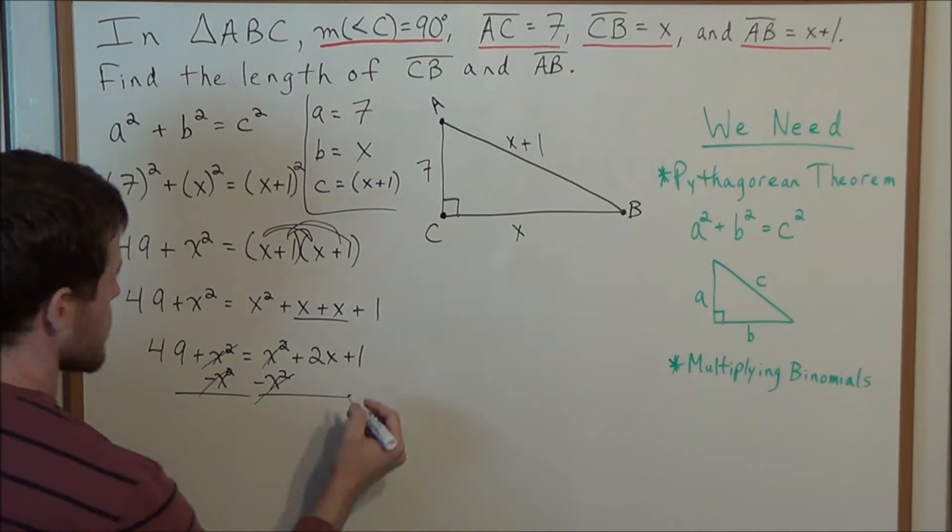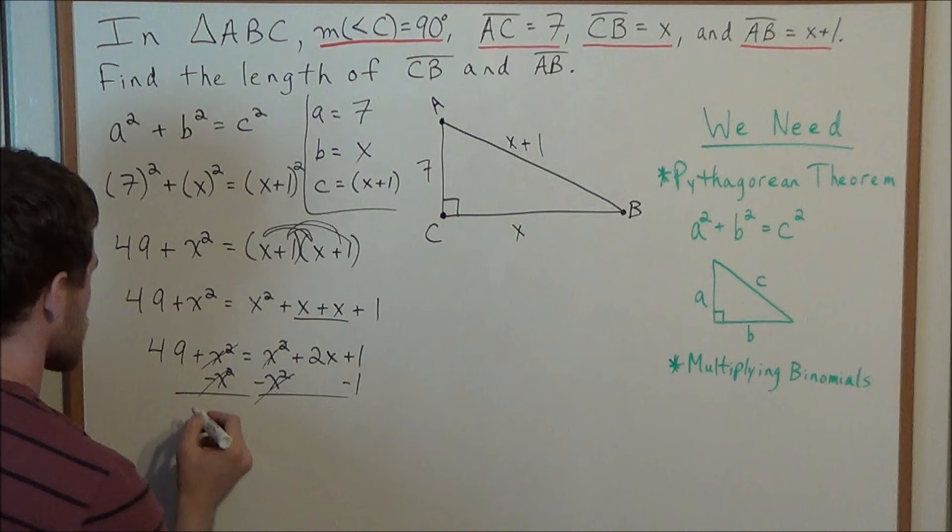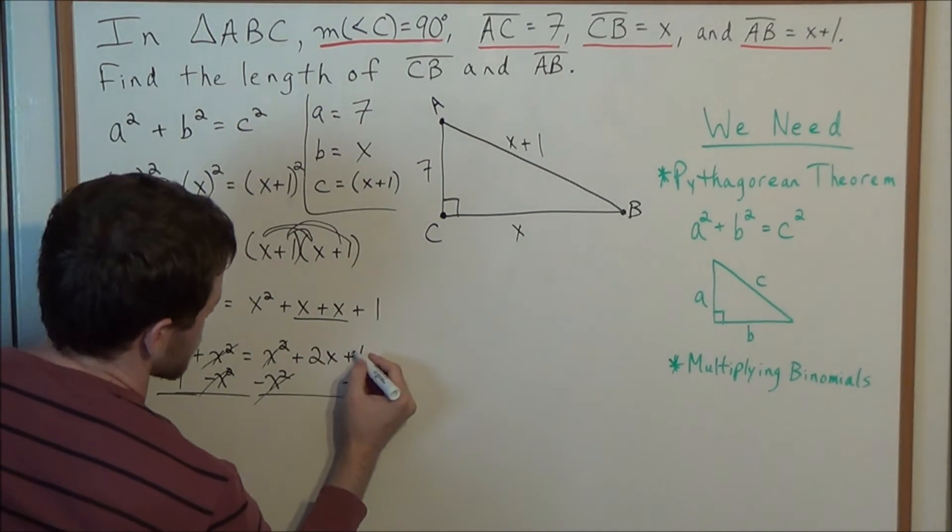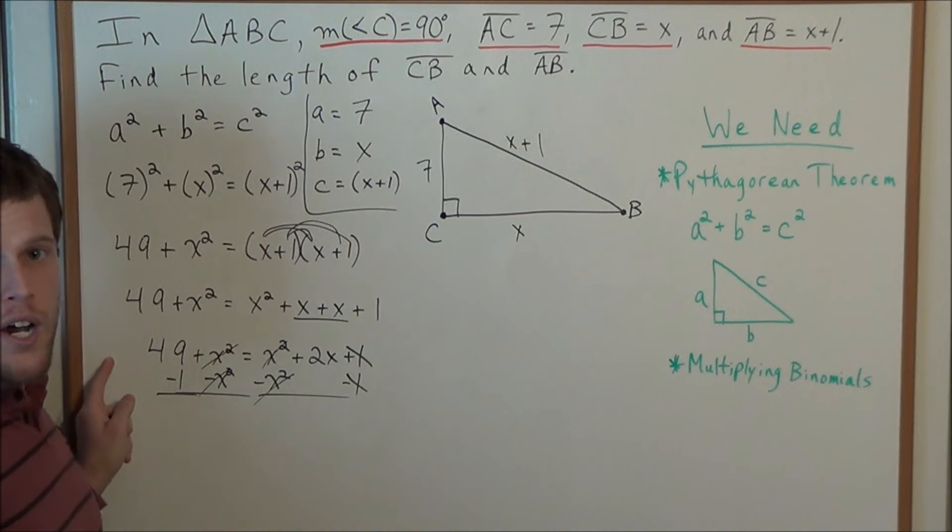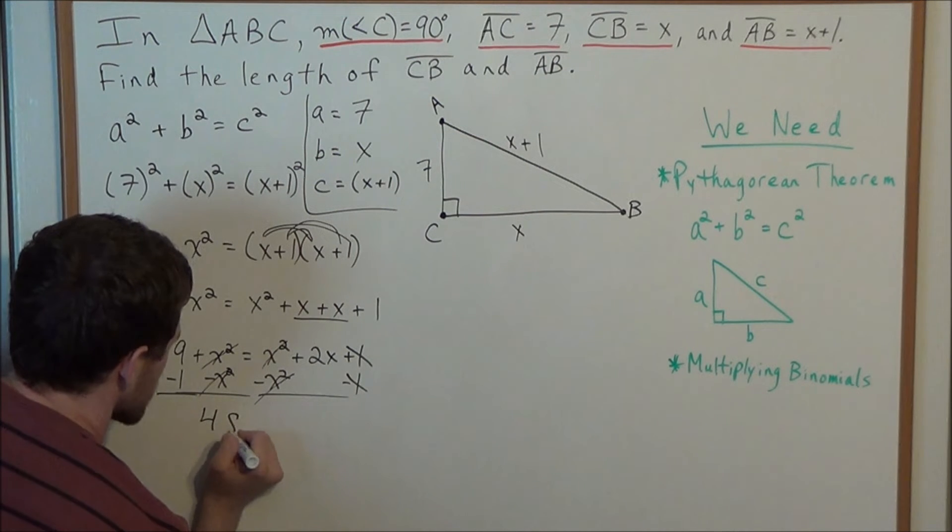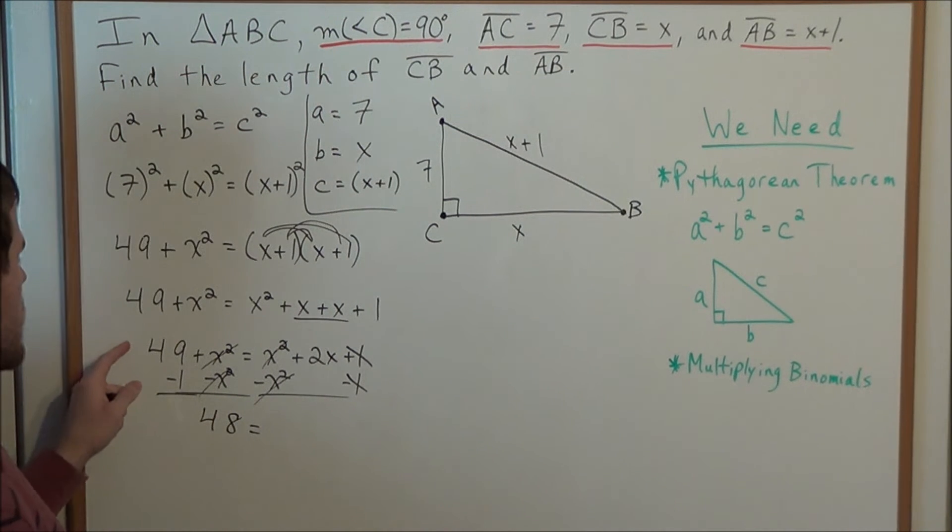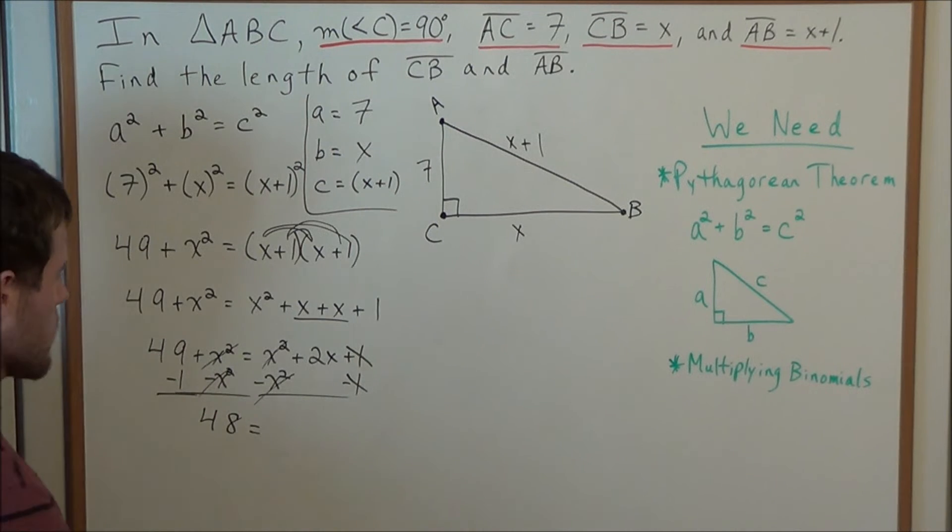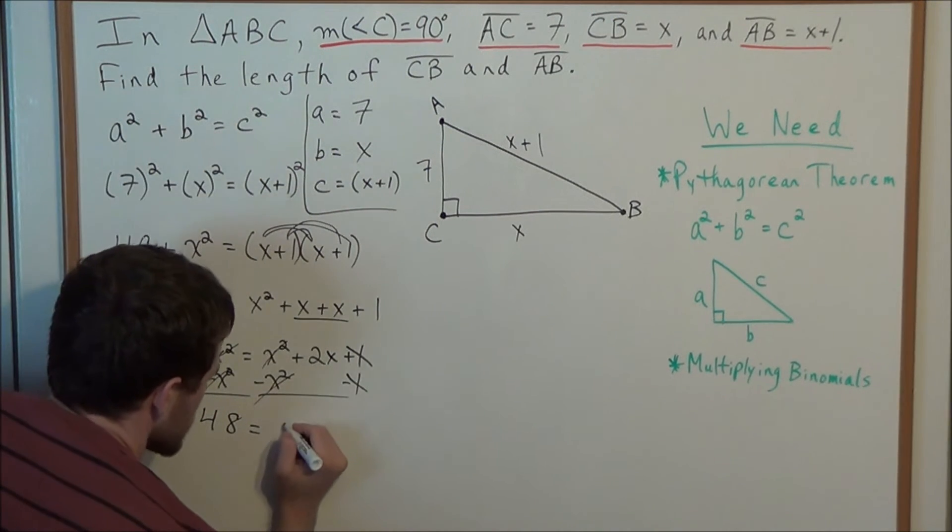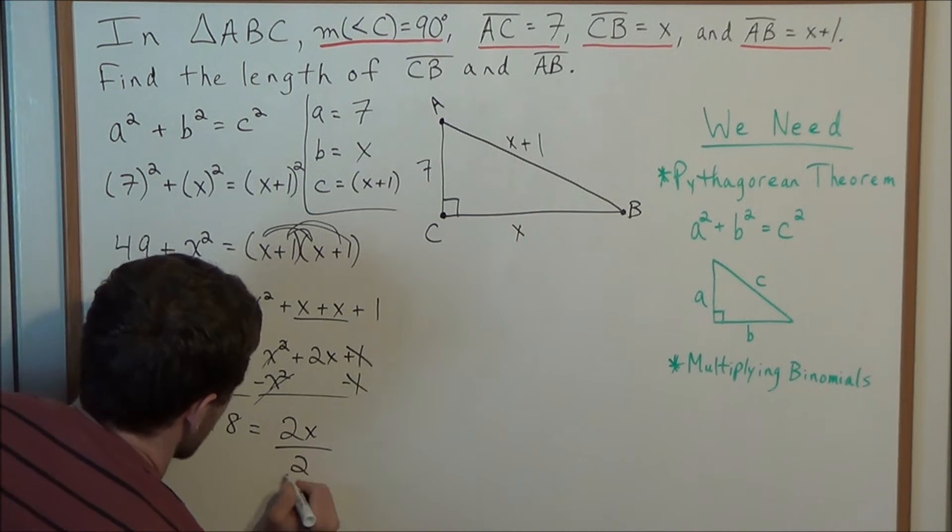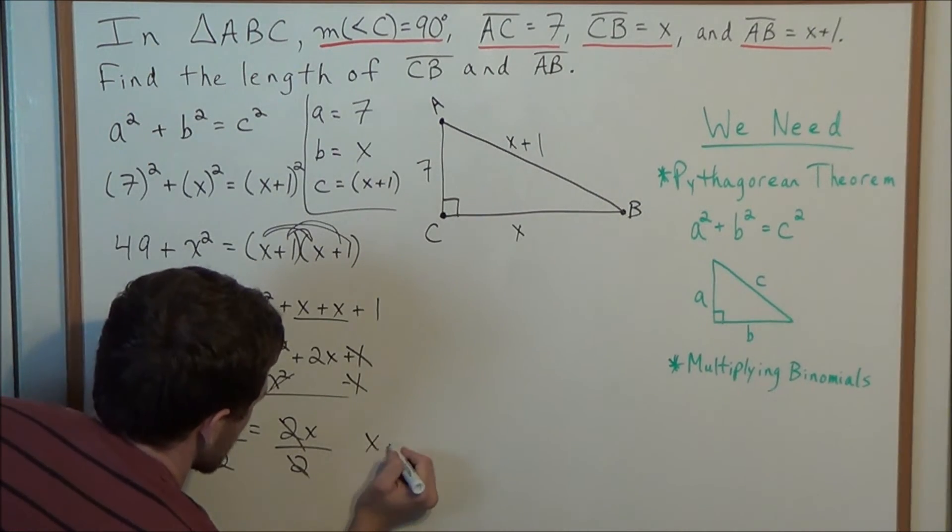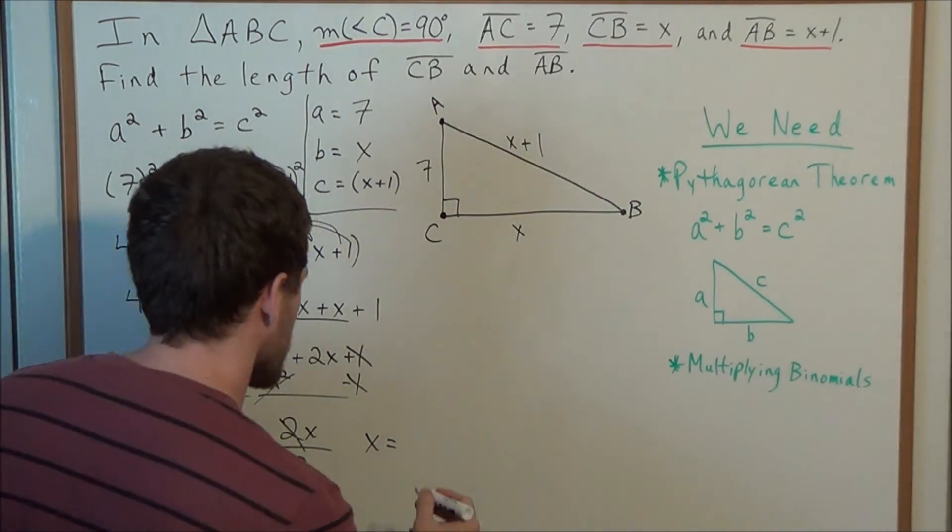And this will get the X squares to cancel out. And also in one step we could also subtract 1 from both sides. And this will get the 1 minus 1 on the right hand side will cancel out. And we have 49 minus 1 on the left hand side. So now all we have left, we have 48 on the left. Because remember 49 minus 1 is 48, and the X squared is cancelled out. So 48 equals, all that's left on the right hand side is 2X. So now we divide by 2.